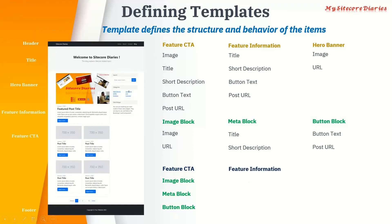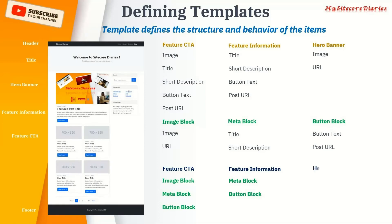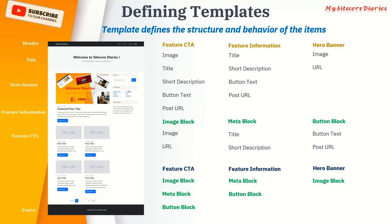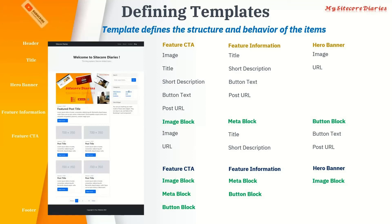For feature information, inheriting the meta block and button block will cover everything. For hero banner, it is simply the image block. So overall, this is how you define templates: first, check the wireframes; break them down into modules; for each module, find what fields are required; then find the common fields; create common base templates; and then inherit those common templates in the main templates.